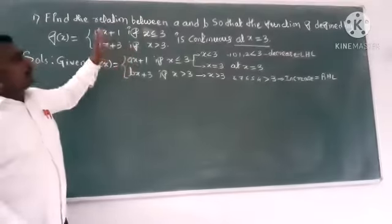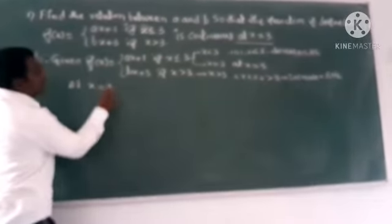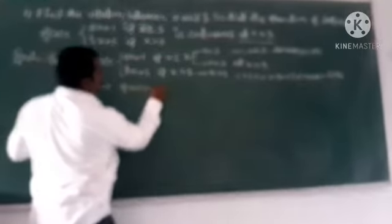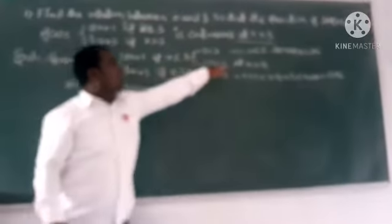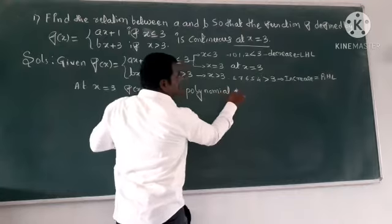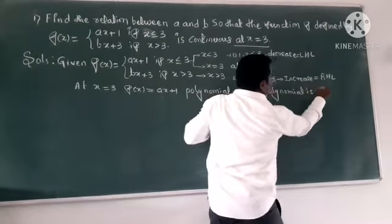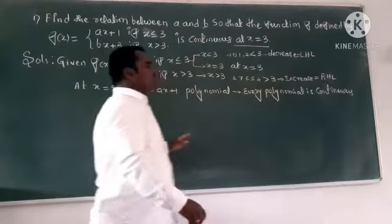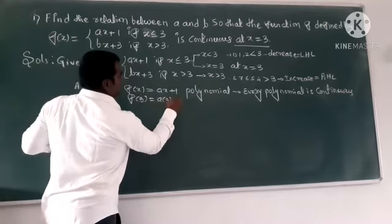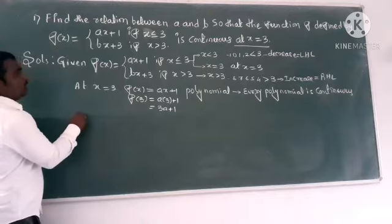We are going to find the value at x equals 3. Since f(x) equals ax plus 1 is in the form of a polynomial function, and every polynomial function is continuous, in a single step we can evaluate: f(3) equals a times 3 plus 1, which equals 3a plus 1. This is the value at the point.